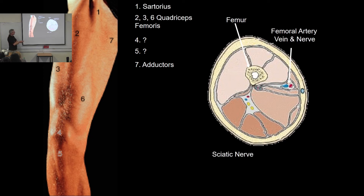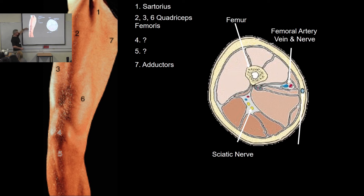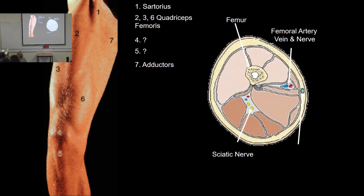The femoral vein, nerve, and artery run on the medial aspect. When reading cross-sectional images the convention is to look up from the feet, so the medial aspect is on the right of the image. Therefore, the sciatic nerve is posterior and the femoral nerve is medial.